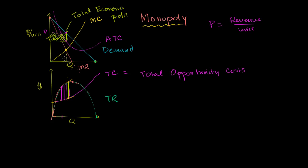We can maintain this as a sustainable scenario because we have a monopoly — no one else can enter. If this were not a monopoly and there were no barriers to entry, other people would see the economic profit and have an incentive to put the same resources together and compete, because they'd get better returns than their opportunity costs — better than their alternatives.